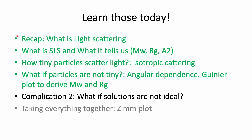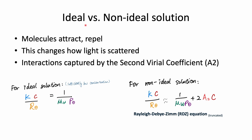Now we accept another challenge: when the solution is no longer ideal. An ideal solution is one where solute molecules don't really interact with each other. However, at increasing solute concentrations, the molecules attract or repel each other, and these interactions change how light is scattered. To cover this, we introduce the second virial coefficient A2 into the equation. For a non-ideal solution, Kc/R(θ) ≈ 1/(MW·P(θ)) + 2A2c. This equation is called the Rayleigh-Debye-Zimm equation.